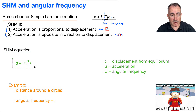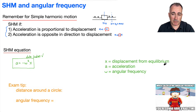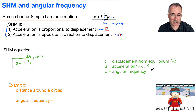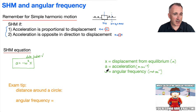This equation a equals minus omega squared x is in your data booklet. Let's define everything: x is displacement from equilibrium, measured in meters; acceleration is measured in meters per second squared; and angular frequency omega is in radians per second, so we write it as seconds to the minus one.